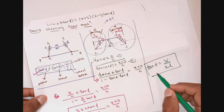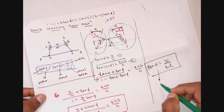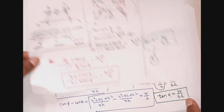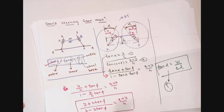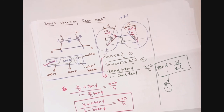This equation — tan α = W/(2L) — is used in the initial stages of design of the Davis steering gear mechanism so that the condition of correct steering is satisfied. The Davis steering gear mechanism satisfies the fundamental equation of correct steering at all positions of steering. However, it is not commonly used because of the presence of sliding pairs, which cause more wear and tear due to friction. In the next lecture we will discuss the Ackermann steering gear mechanism. Thank you.